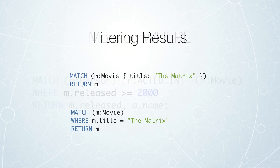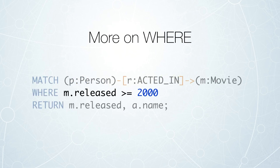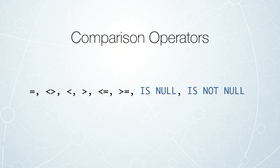We'll be talking about more types of comparisons you can do in the WHERE clause. You can do basic string comparisons and also numeric comparisons. Here, we're looking for a person who acted in a movie where that movie's released date is greater than or equal to the year 2000. All sorts of other operators are available — less than, not equal to, equal to — and some special operators for checking whether something is null or is not null.